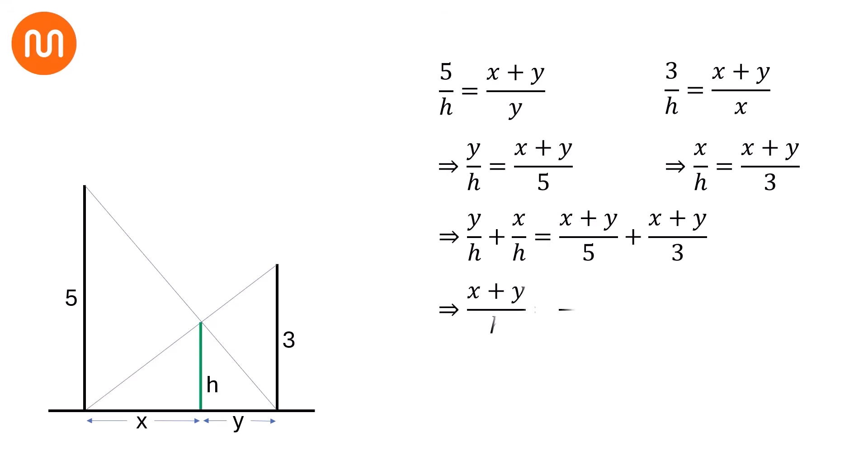Simplifying this, we will have this equation. Canceling x plus y from both sides, we will find the value of h as 15 over 8, which is equal to 1.875. And that's our solution.